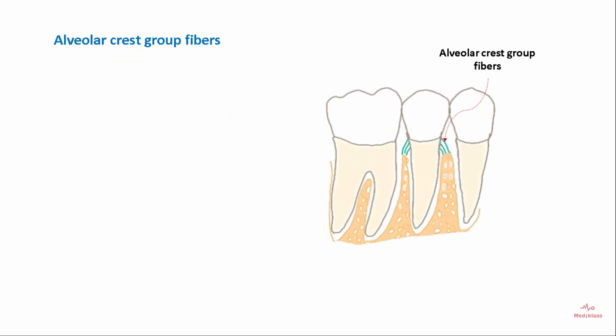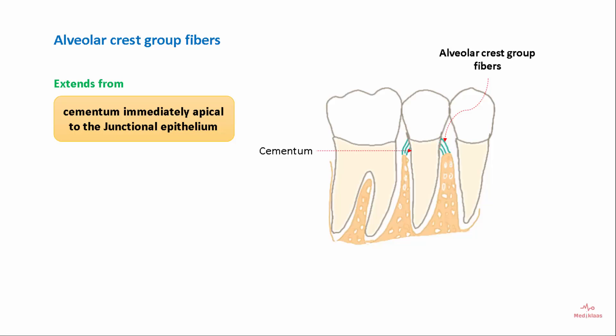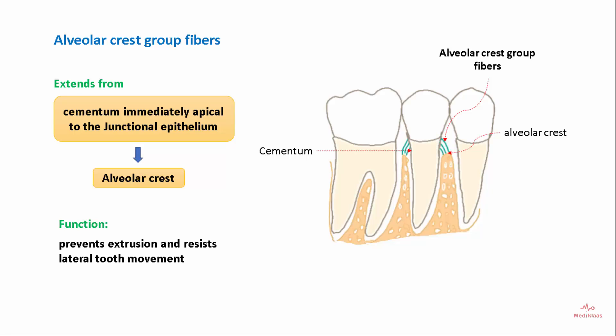The alveolar crest group of fibers extends from the cementum immediately apical to the junctional epithelium to the alveolar crest. Their function is to prevent extrusion and resist lateral tooth movement.